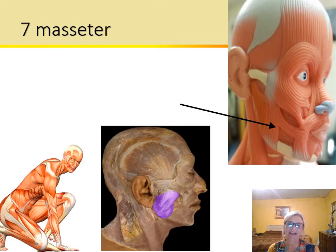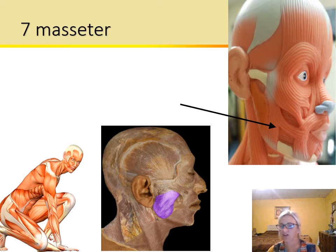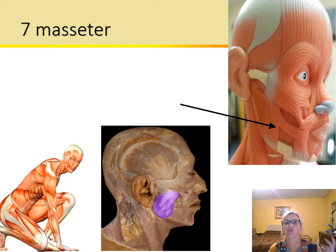Next we have the masseter, which helps with mastication — that is chewing. Masseter actually means 'chewer' in Latin. It is one of the muscles of mastication and also helps to elevate the mandible.